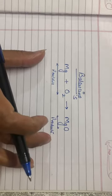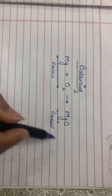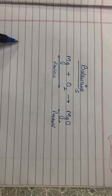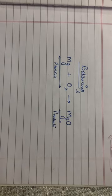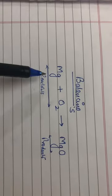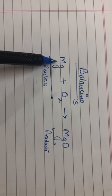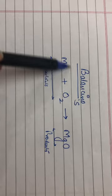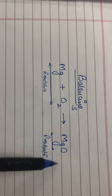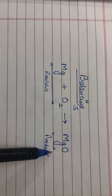Whenever a chemical equation is written, it has to be governed by a law called law of conservation of mass. According to which the number of atoms on the reactant side should be equal to number of atoms on the product side.